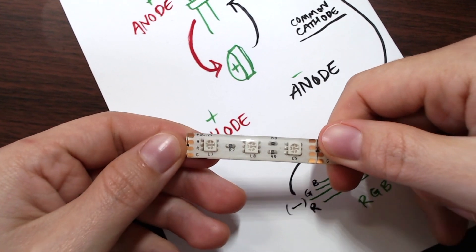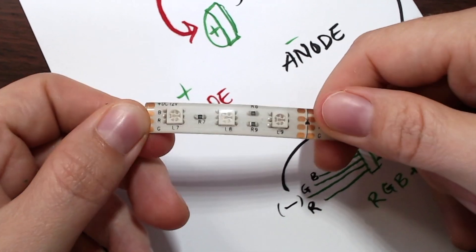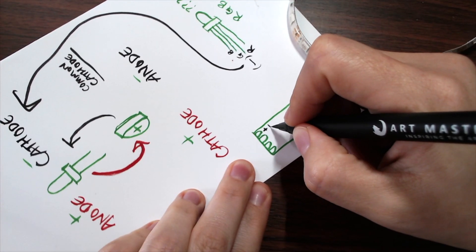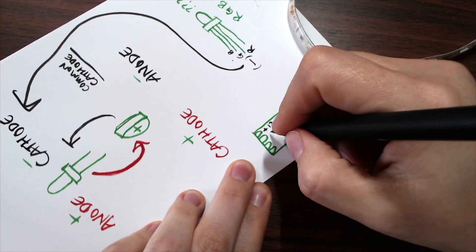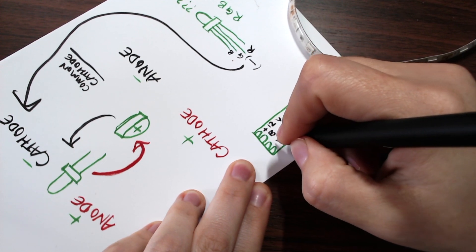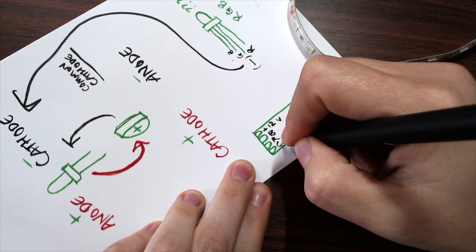Here's an RGB LED strip. It has a bunch of RGB LEDs connected together. This one is a common anode RGB LED strip, because they all share the same 12-volt line in. And then each one has its own ground contact.